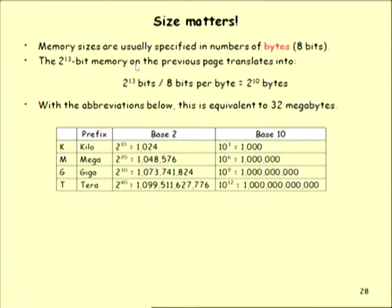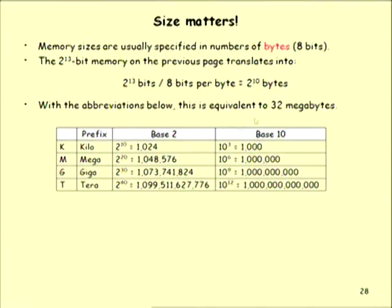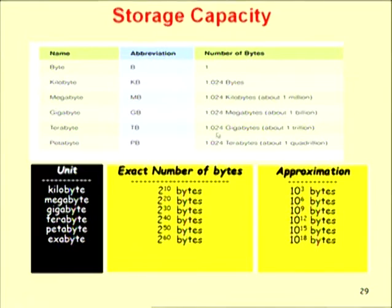1 kilobyte is not 1000 bytes — it is 1024 bytes. The standard references are: kilo (2^10), mega (2^20), giga (2^30), and tera (2^40). A byte is 1 byte; a kilobyte is 1024 bytes; a megabyte is 1024 kilobytes; a gigabyte is 1024 megabytes. Today memory is measured in terabytes, and supercomputer storage reaches petabytes — 2^50 bytes, or approximately 10^15 bytes.